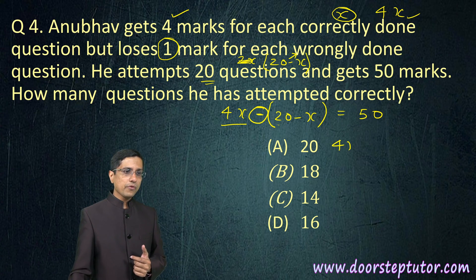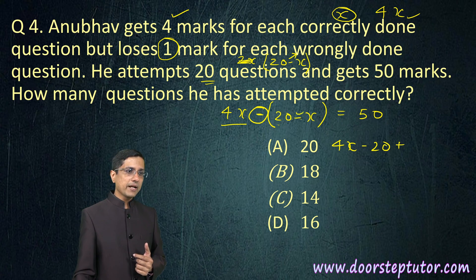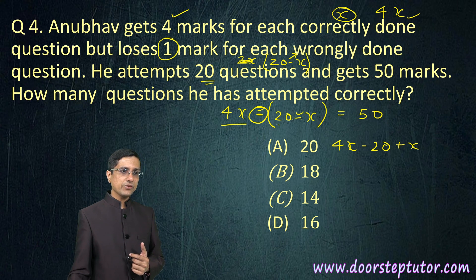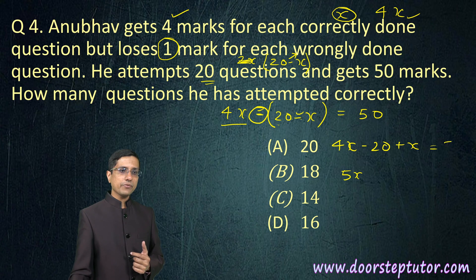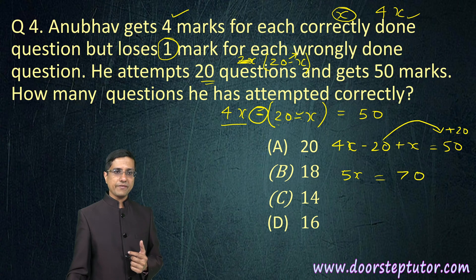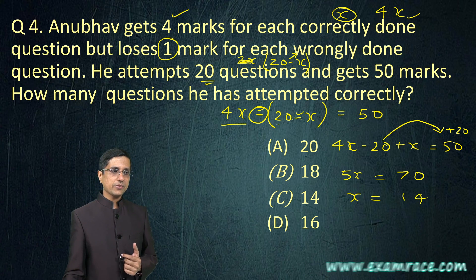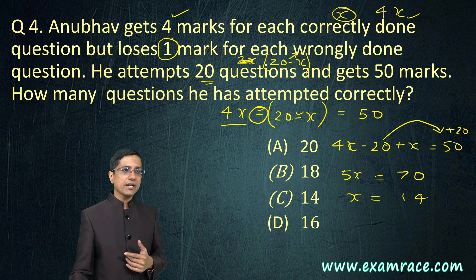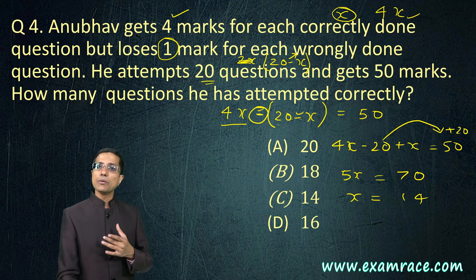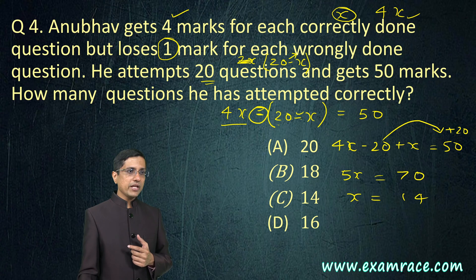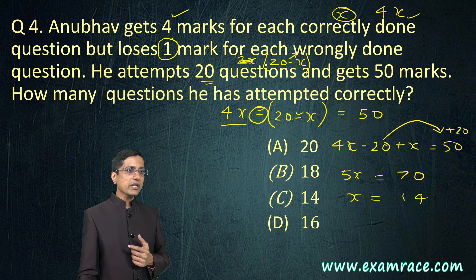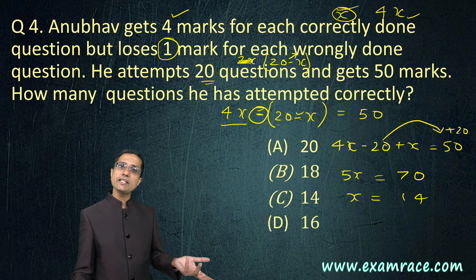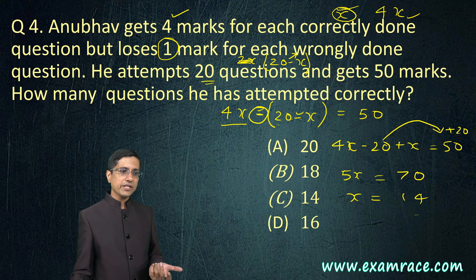This becomes 4X. This bracket would open and we would get minus 20. And this minus and minus would become plus. This becomes 5X. And this is equal to 50. This minus 20 would go here and this would become plus 20. And this becomes 70. And X comes out to be 14. Now, we should be able to put it back in the equation. In this case, we already assume that X was the number of correct questions. So, 14 is the answer right away. This 14 is the right answer.